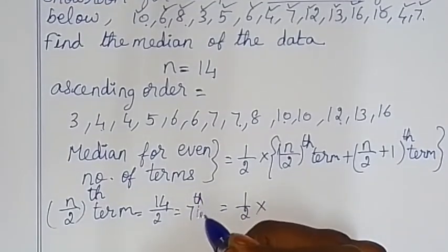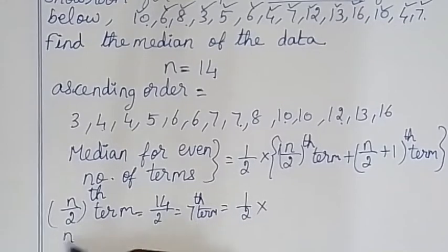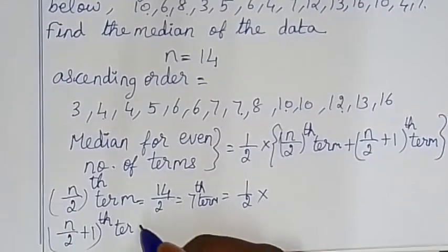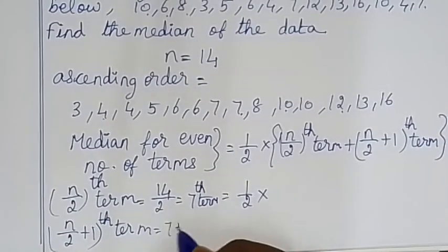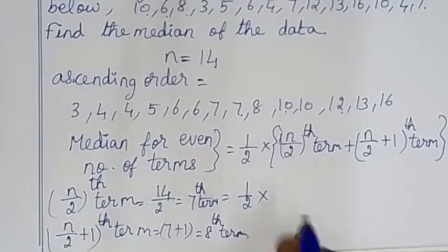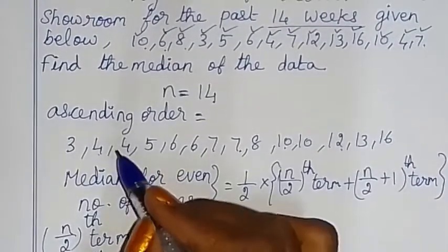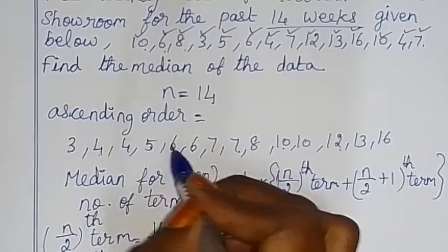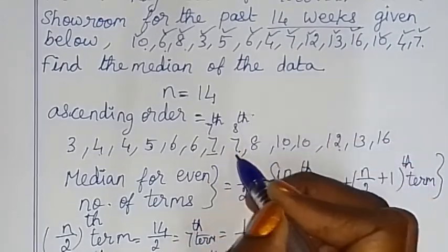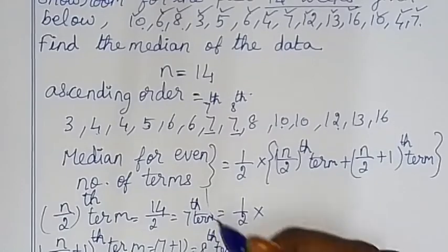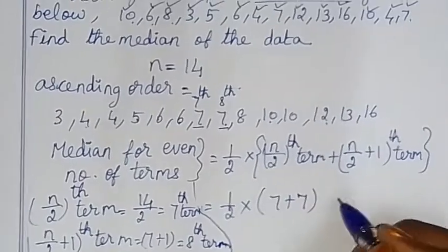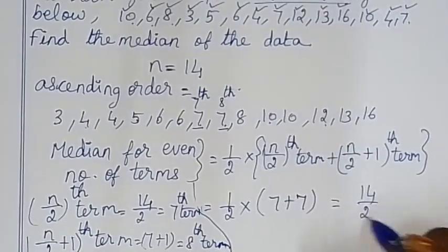And N/2 + 1 = 8th term. From the arranged data, the 7th term is 7 and the 8th term is 7. So median = half of (7 + 7) = 14/2 = 7. The median is 7.